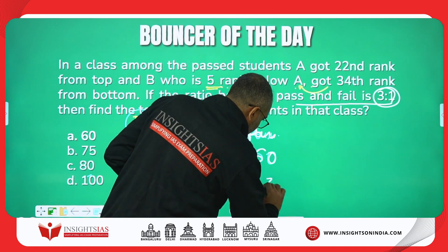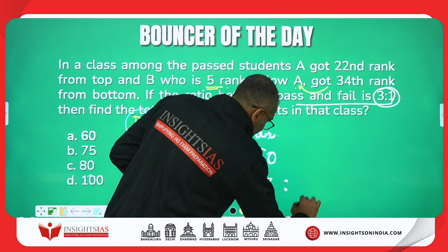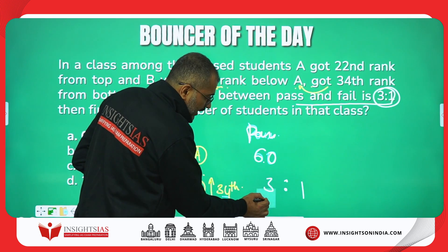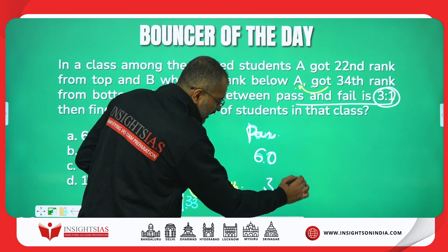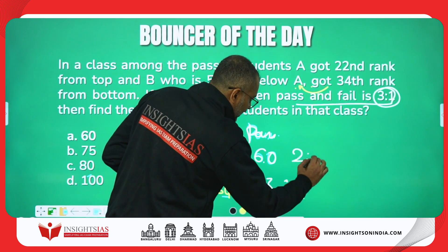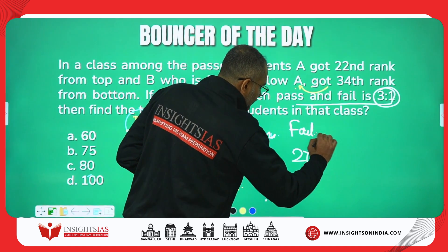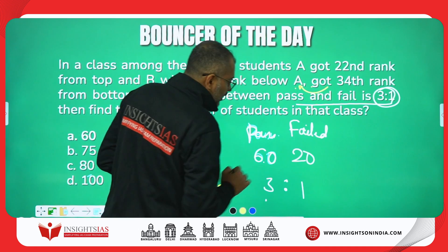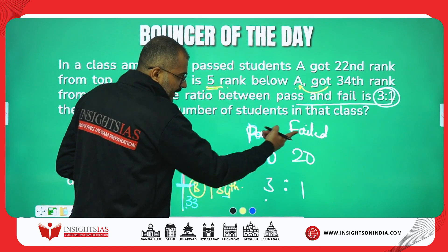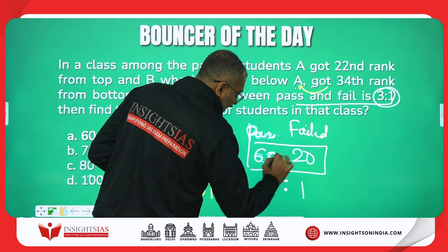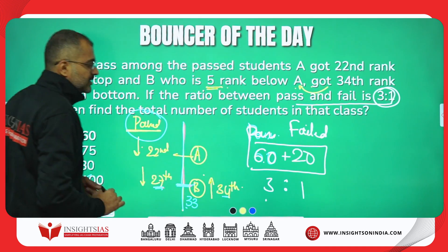The ratio of pass to fail is 3:1. If 60 equals 3 parts, then one part equals 20. These are the failed candidates. So total number of candidates in the class is 60 plus 20, which is 80.